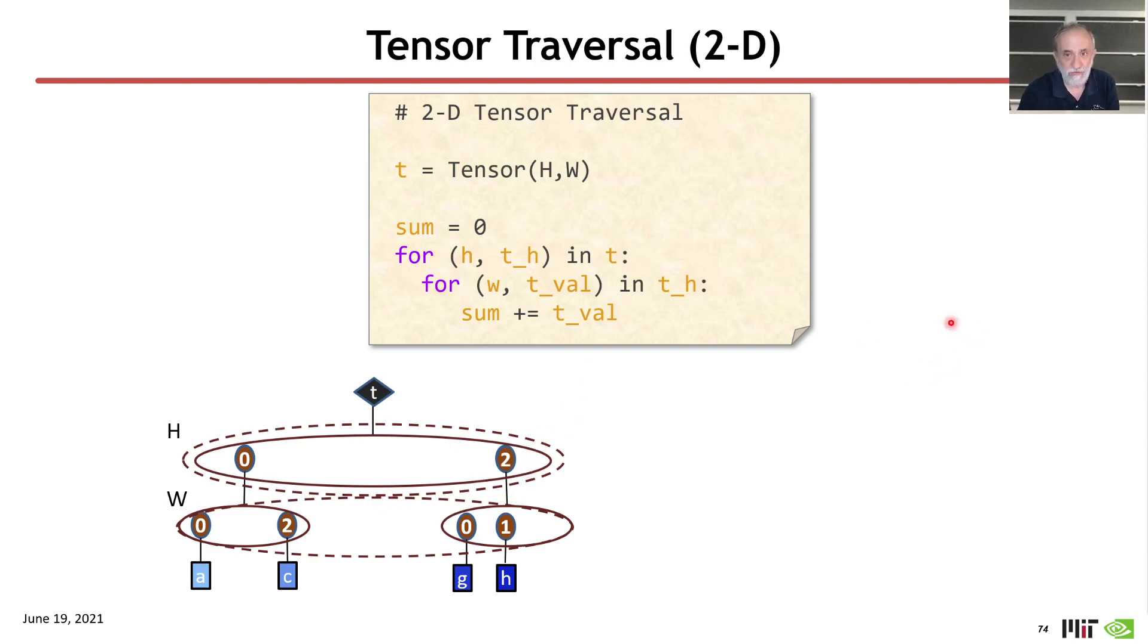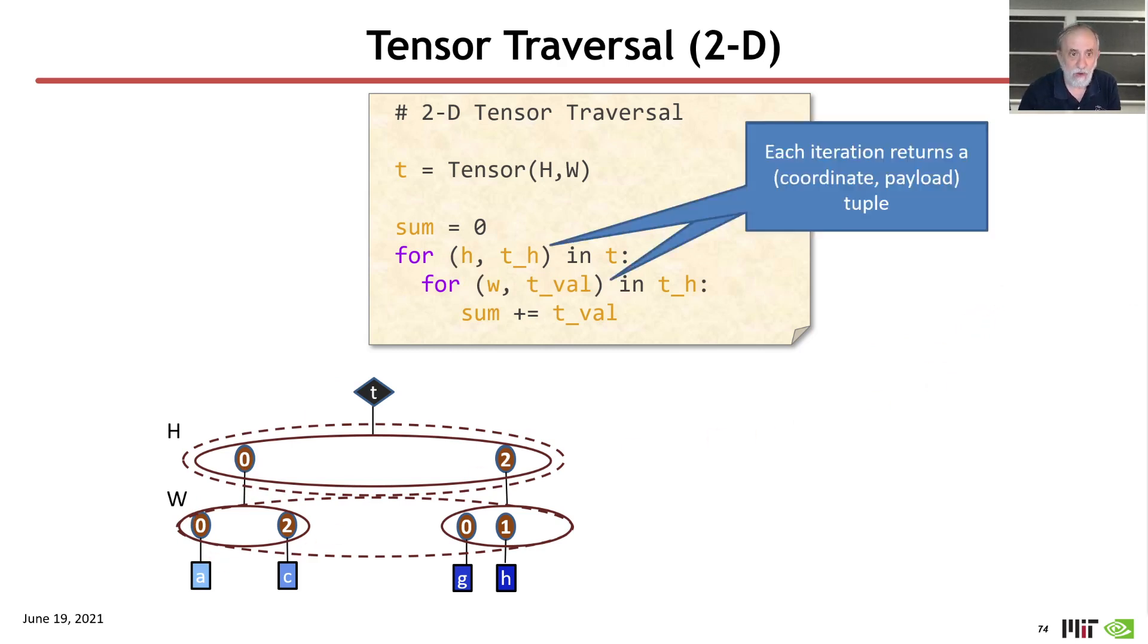However, when it returns its coordinate and payload, what is the payload of the first coordinate here? It is a fiber in the next rank. And so each iteration returns a coordinate and payload tuple. However, they're different in the sense that the coordinate payload, the payload in particular, from that top rank is a reference to a fiber in the next rank.